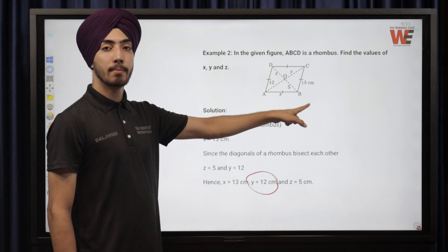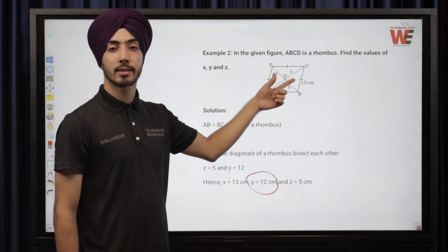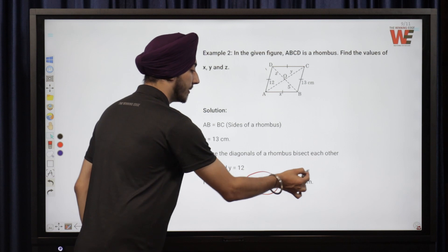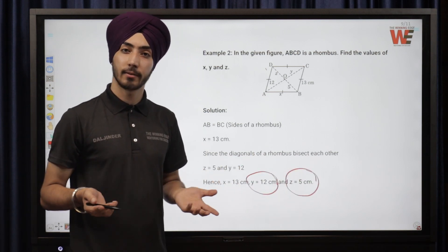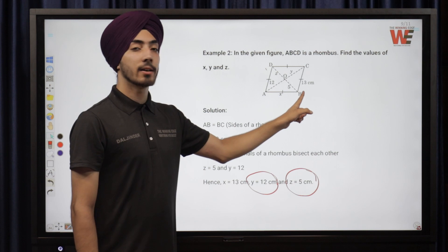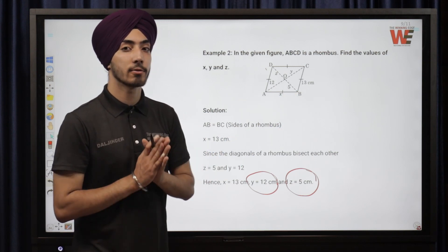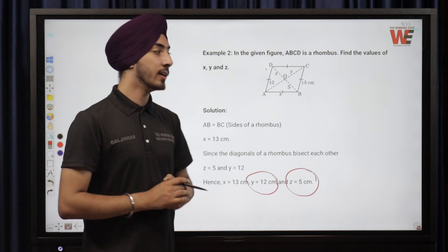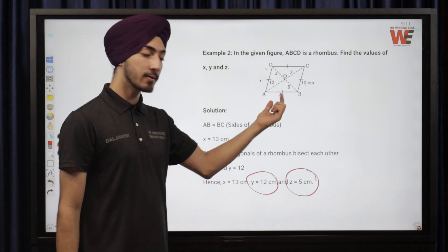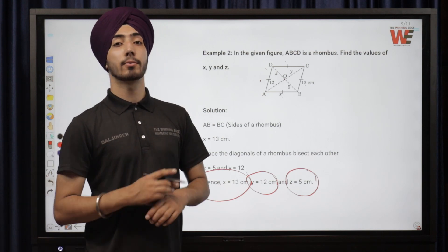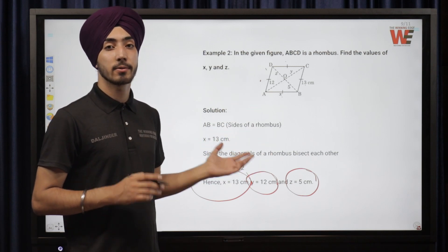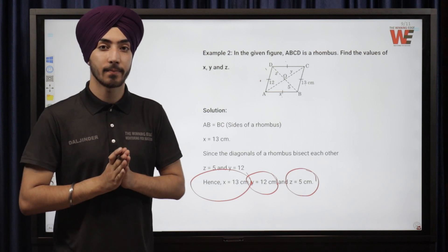In diagonal DB, DO is given as 5, so Z — the other half — is also 5 centimetres, by the same bisection property. For X: since a rhombus has all four sides equal and one side is given as 13, all sides including AB are 13. Therefore X equals 13. These answers follow directly from basic rhombus properties — no advanced reasoning needed.